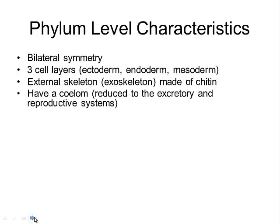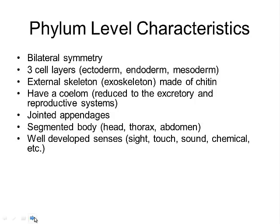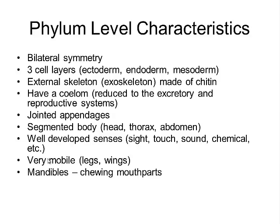They have a coelom reduced to the excretory and reproductive system, jointed appendages — which is a big one — and a segmented body, which is another big one. They have well-developed senses: sight, touch, sound, and chemical. Highlight these three: exoskeleton, jointed appendages, and segmented body. They are also very mobile; many insects can fly. They have mandibles used for chewing, and some have the ability to undergo metamorphosis — going from egg to larva to adult.